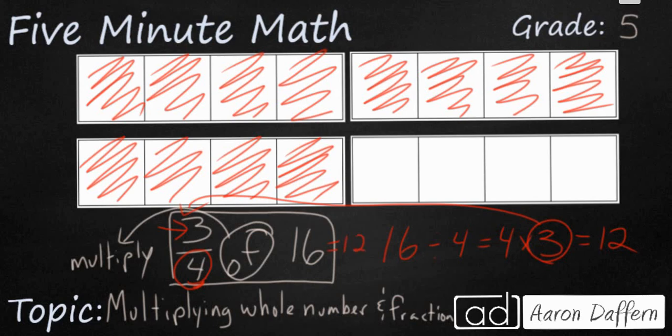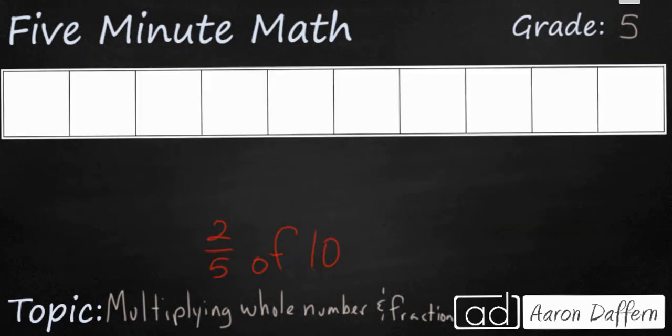Let's look at another example. You see here we have a new problem: 2 fifths of 10, so that means 2 fifths times 10. I have 10 boxes on the screen just like we did last time.